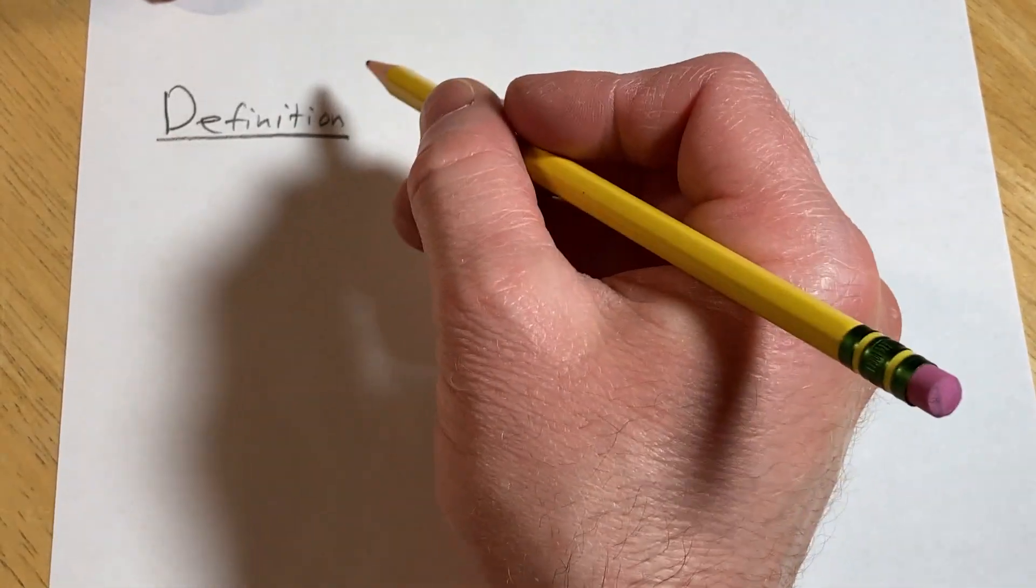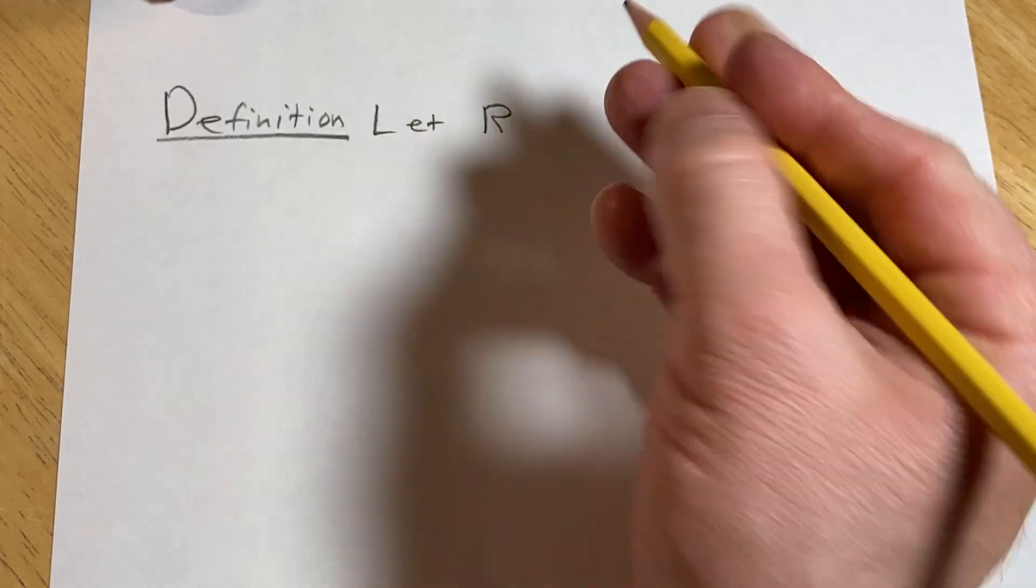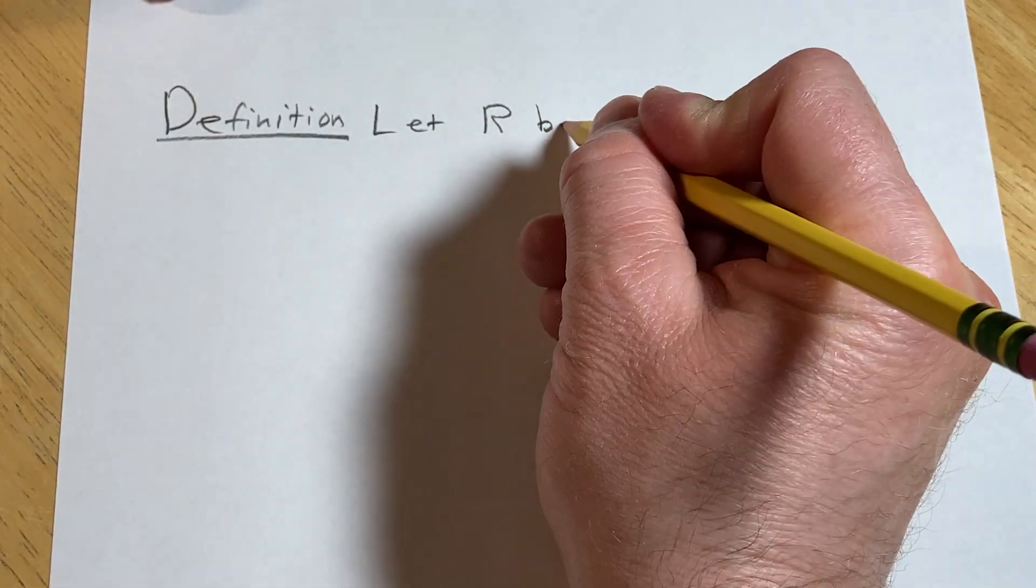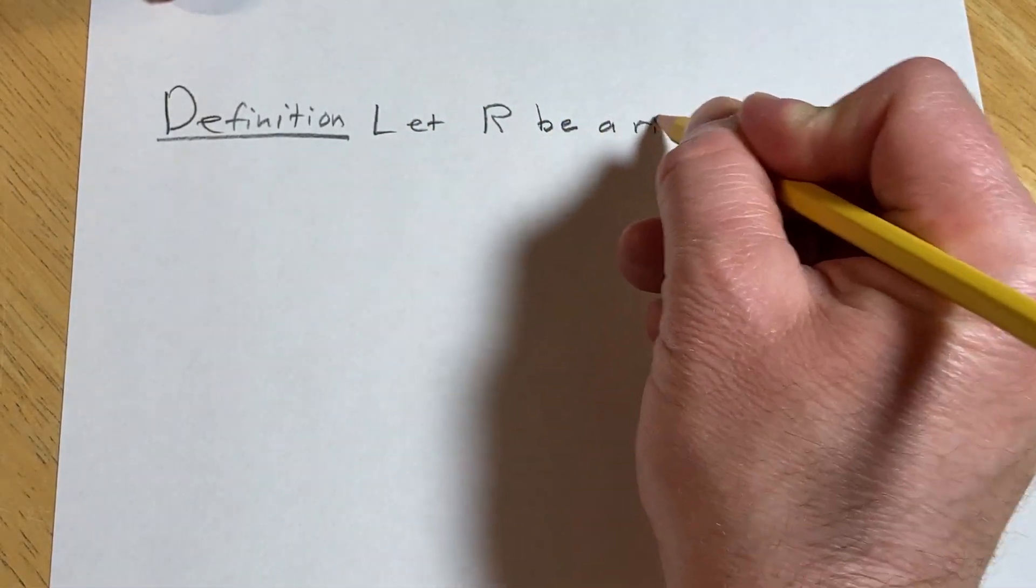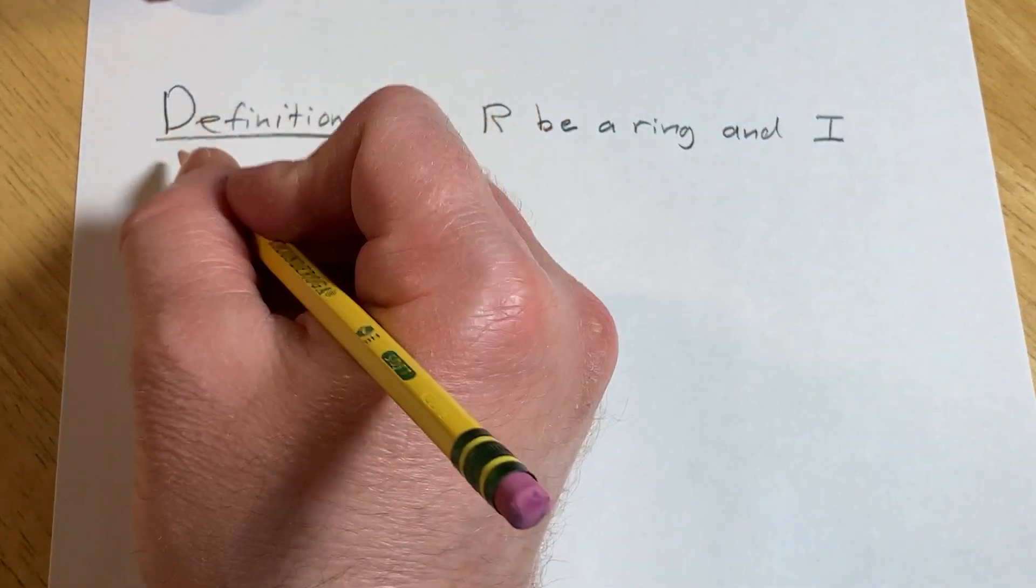So the setup is as follows. We're going to have R be a ring, so let R be a ring, and I a non-empty subset of R.